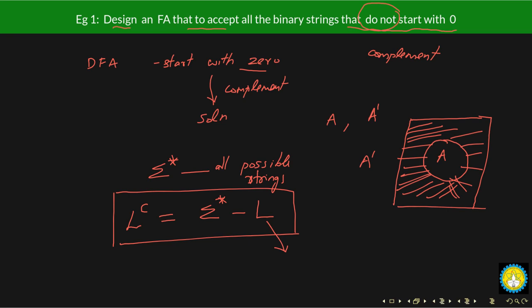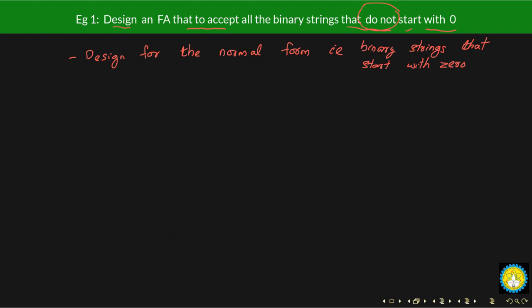There are standard procedures: if you are able to design the DFA for the normal language, then it is very easy to design the DFA for the complement language. Let's construct the DFA for binary strings that start with zero. Let's say our starting state is Q0. From Q0, if I'm seeing a zero, I will be in a final state — let's call it Q1.